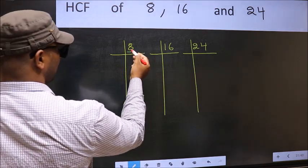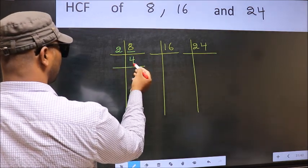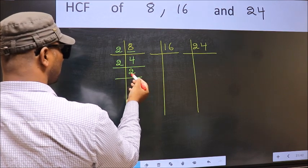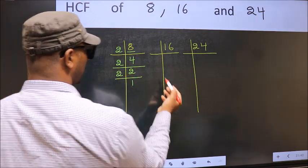Now we have 8. 8 is 2 times 4 is 8. Now 4 is 2 times 2 is 4. Now 2 is a prime number so 2 times 1 is 2. Now the other number.